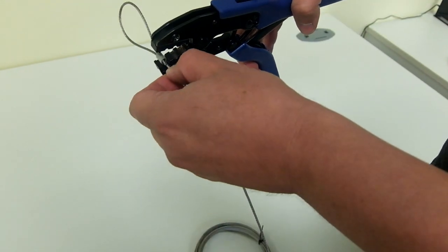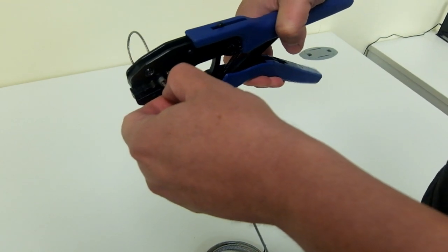The die set for the 2.5 ferrule is nearest the back of the tool for maximum pressure.